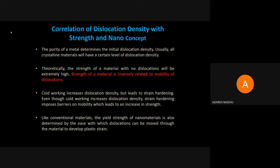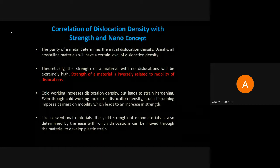When dislocation density increases, deformation also increases. The purity of a material can be determined by using the initial dislocation density. The strength of a material and the dislocation density are inversely proportional to one another — if dislocation density increases, the strength of the material decreases.